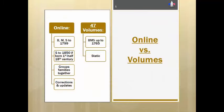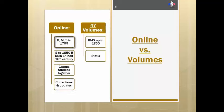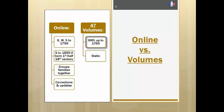The online version of the PRDH offers so much more than what is in the 47 volumes. Periodically there are corrections and updates made to the database. It includes baptisms, marriages, and burials to 1799, with some burials as late as 1850 if the person was born in the first half of the 18th century. The online PRDH also groups families together and allows you to link from one generation to the next fairly easily. The 47 volumes, on the other hand, are static and include baptisms, marriages, and burials up to 1765 only. So a researcher would have to work backwards to the 1765 time period before the volumes would be useful.